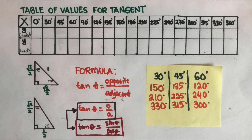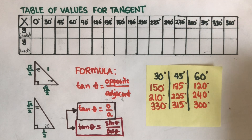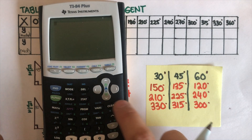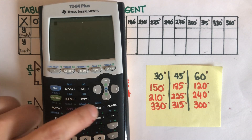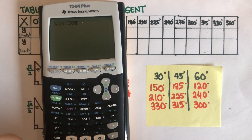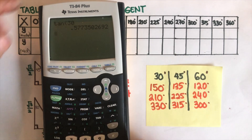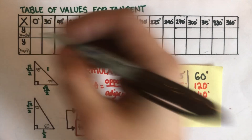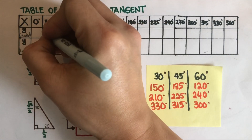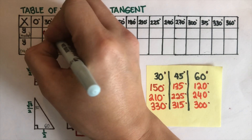We will start with the measures for 30 first. To get the rounded value for 30, all we need to do is use the calculator. Tangent 30 is equal to 0.577. So I'm going to write 0.577 here.